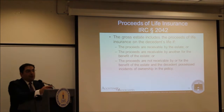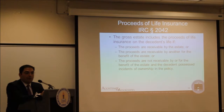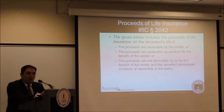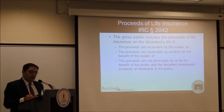Oftentimes when preparing an estate tax return you'll be dealing with situations where the decedent owns life insurance payable to an irrevocable life insurance trust. Generally, to the extent the trust is drafted correctly, you'll be able to exclude the value of those proceeds when preparing the estate tax return. But you want to make sure all formalities under the trust agreement were complied with. This is one of the first things the IRS will ask for. To the extent that crummy notices were not given to the beneficiaries, the IRS will disregard the gift tax exclusion that applied to earlier contributions and tack on additional gift tax to amounts due related to the life insurance trust.